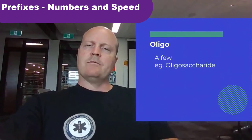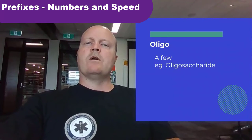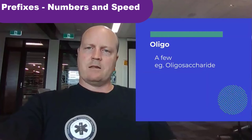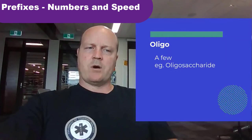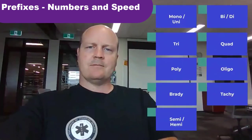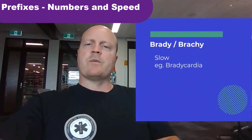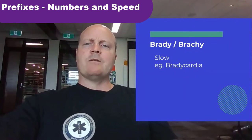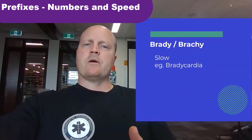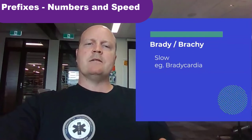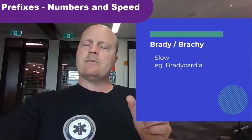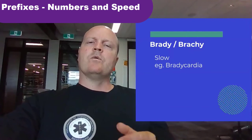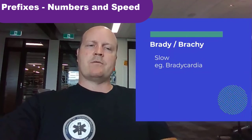Oligo means a few, so an oligosaccharide is just a few molecules of sugar coming together to form a carbohydrate. Brady means slow — bradycardia would be an abnormally slow heart rate.